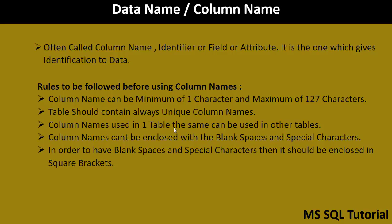There are certain rules to follow when giving or using column names. Rule one: the column name can be a minimum of one character and a maximum of 127 characters. For example, employee ID or employee name have more than one character. You cannot give a null value or spaces in the column name. So the length of the column name should be minimum one and maximum 127 characters.